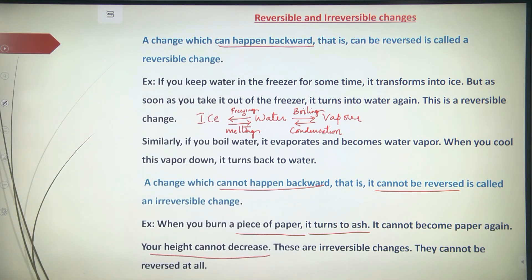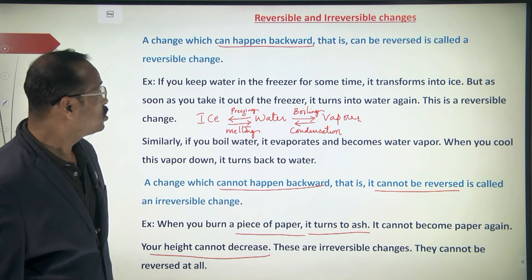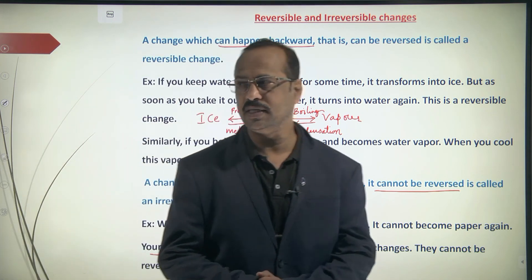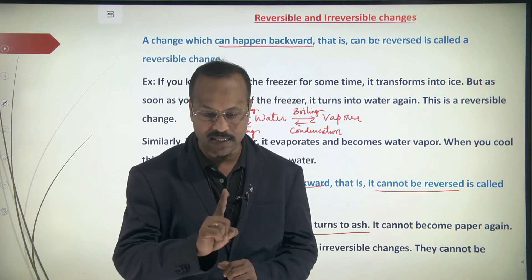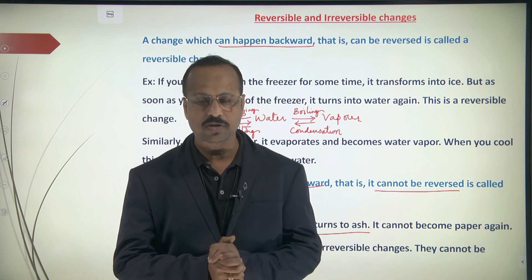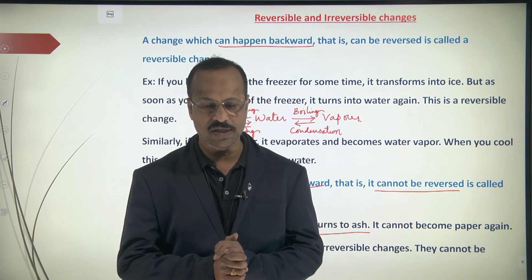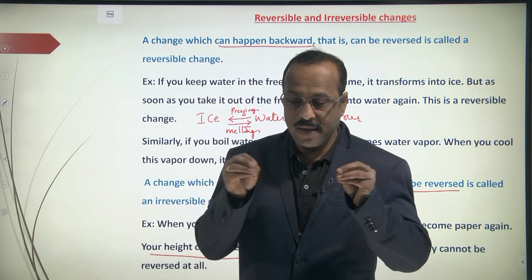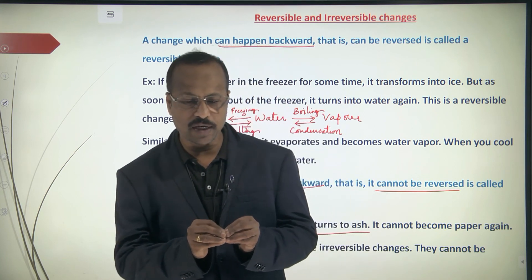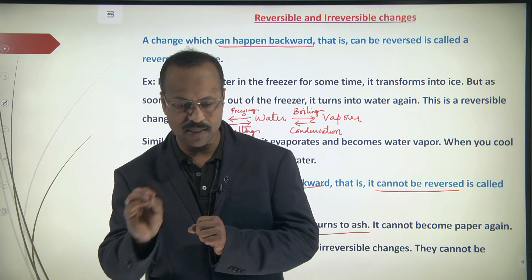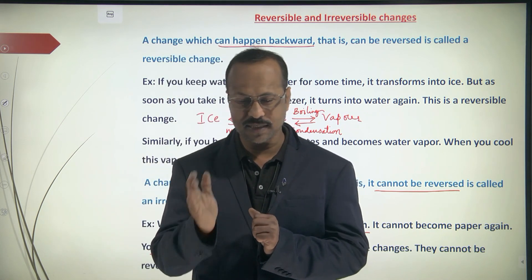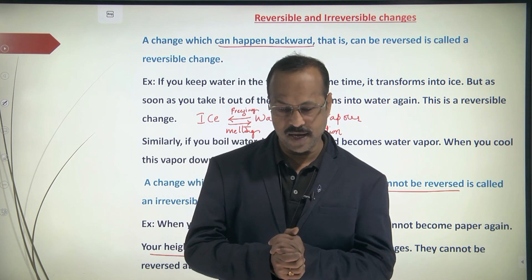Make sure to write all of this in your class work notebook. This was the introduction for the chapter. The main concept of this chapter is physical change and chemical change. In the next class we will start physical and chemical changes, and for chemical changes you will also need to learn elements, atoms, and symbols. We will discuss those in the next classes.